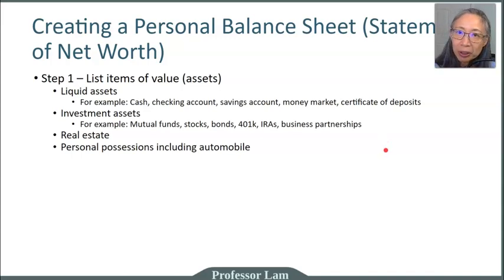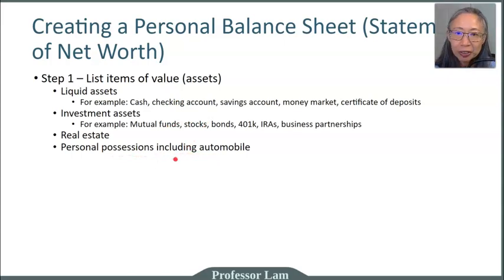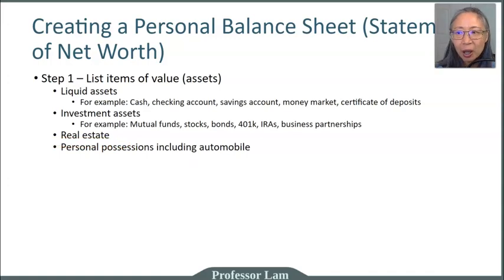An important thing to keep in mind is that when you list the value of your assets, you want to list the current market value. This is particularly important for personal possessions. For example, an automobile is a depreciating asset — you may have purchased a car for $30,000, but today your car may only be worth $10,000 or $15,000. Real estate can both go up and down, so again, we want to list the value of what you think you can sell it for. Step one is listing everything that you own.